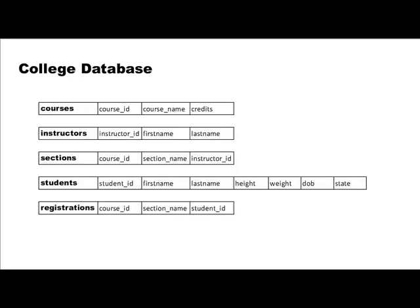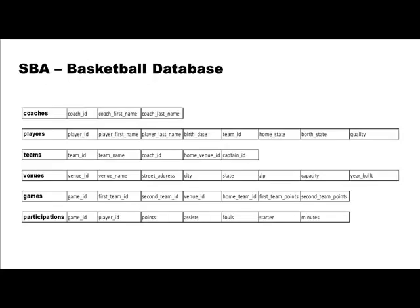We have also looked at the college database, which had courses, instructors, sections, students, and registrations, and we did some SQL around this. Then, of course, we started the course with our basketball database, which had six tables: coaches, players, teams, venues, games, and participations. From each one of these databases, we were able to extract useful information. At the time the database designer designed those databases, they didn't really have to think about what pieces of information we would need to retrieve — that's the beauty of relational databases.